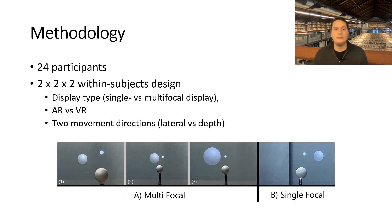We used a 2x2x2 within-subject design. The three independent variables were display type (single vs. multifocal display), AR vs. VR, and two movement directions (lateral vs. depth). In the lateral conditions, alternating targets were placed at 55 cm, while the depth condition had alternating targets at 40 cm and 70 cm distance. To vary the task difficulty, we used three different target sizes.